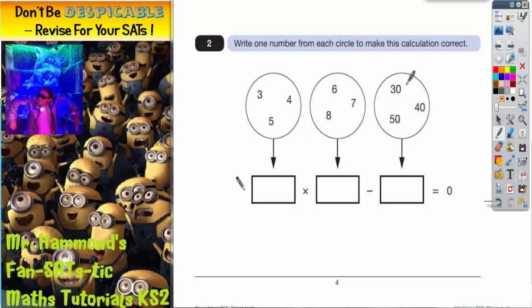So, if I look at the numbers in the end, can I make 30 from these two circles by multiplying two of the numbers? Well, yes, I can. If I choose five from this circle and six from this circle, then five times six makes 30.